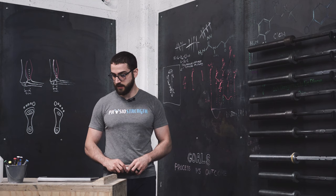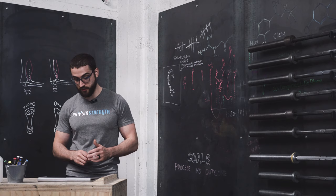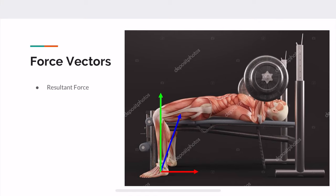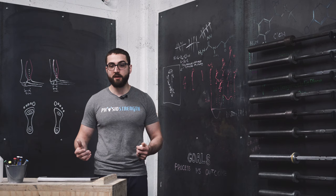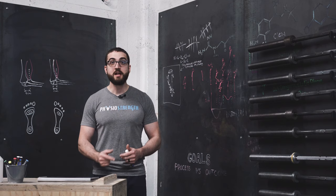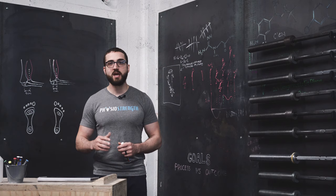Another concept in force vectors that's important and applicable in powerlifting is the resultant force. The resultant force is represented by a blue line and it's a force vector that encompasses both an x component and a y component. In reality, no force you ever apply is going to be directly upward — there's always going to be some x component. You're never applying force purely in the x direction either; there's always going to be a little bit of y. There will always be a resultant force, and that's the one you have to think about.